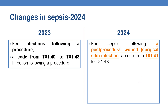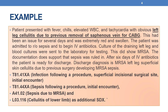Let us see an example for better understanding. A patient presents with fever, chills, elevated WBC, and tachycardia with obvious left leg cellulitis due to previous removal of saphenous vein for CABG. This is a post-surgical site wound. Left leg cellulitis at the site of injury had been an issue for several days and was extremely red and swollen. The patient was admitted to rule out sepsis and to begin IV antibiotics. Cultures of the draining left leg and blood cultures were sent to the laboratory for testing.